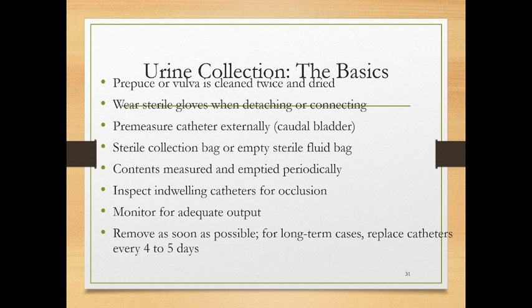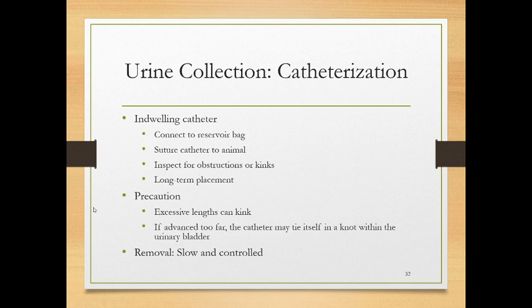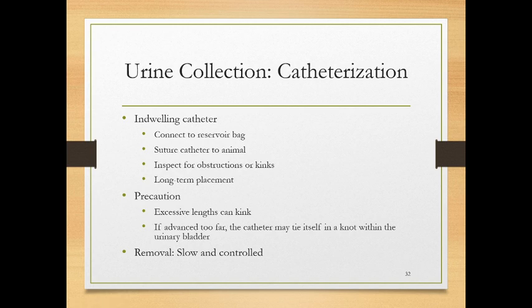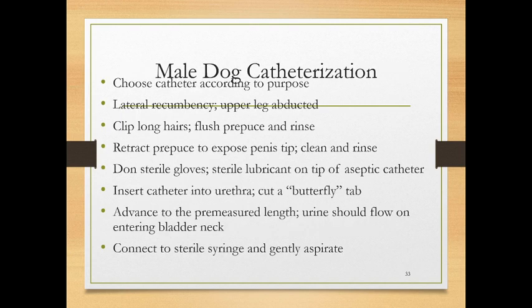Excessive catheter length can cause kinking; inserting too far can cause it to knot in the bladder. For removal, do a slow, controlled withdrawal — you can infuse saline to lubricate as you pull it out. For male dog catheterization — probably the easiest — the dog can be standing or on its side. Clip long hairs for cleanliness, flush the prepuce with chlorhexidine solution, expose and clean the penis tip, then insert a sterile lubricated catheter to the pre-measured length.